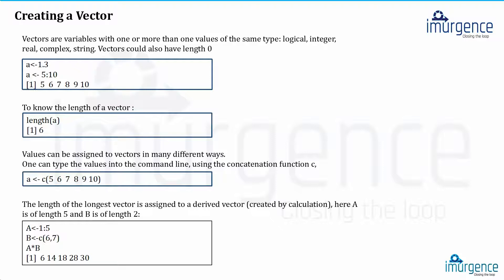When you say 'a' as a variable, you initialize it using the assignment operator, which is the less-than-dash sign (<-). Going forward we will call it the assignment operator. So 'a <- 1.3' assigns the value 1.3. Writing 'a <- 5:10' uses the colon, which stands for sequence, creating a sequence from 5 to 10. Typing 'length(a)' returns 6, since 5,6,7,8,9,10 are the six members.